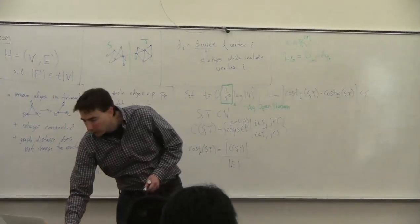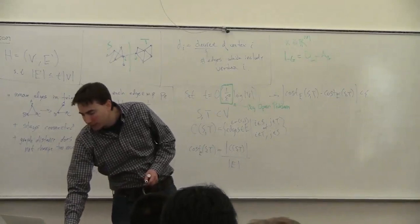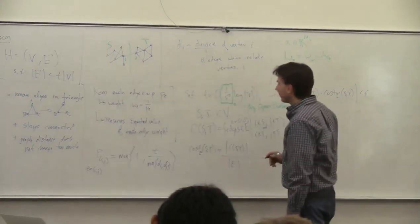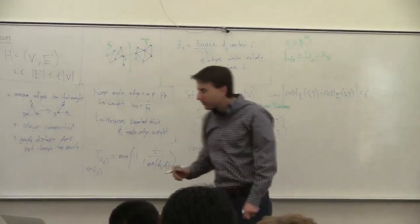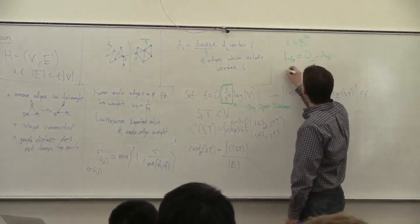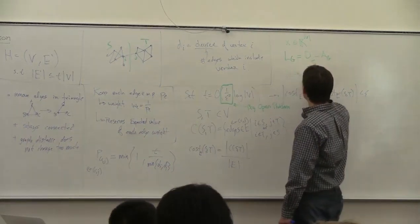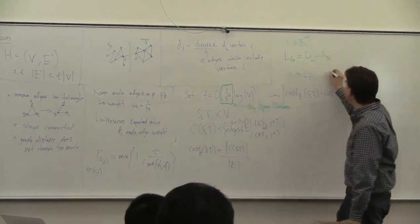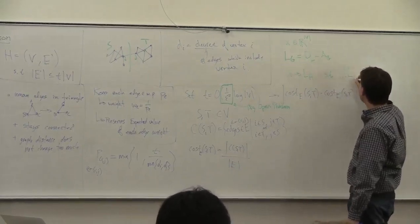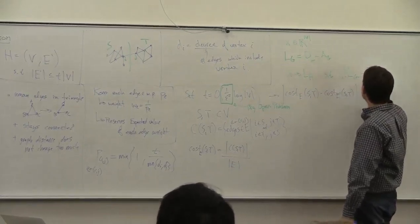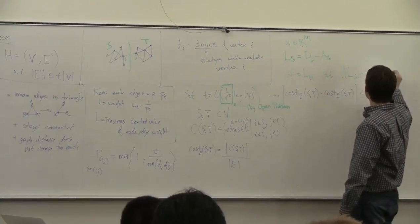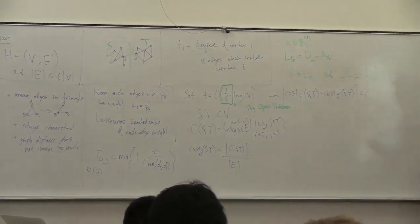What we want is some graph H and its Laplacian L_H such that, if we look at the L2 norm between L_G and L_H, this is always less than epsilon.